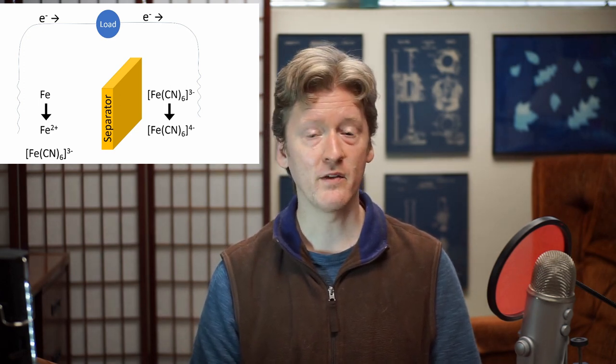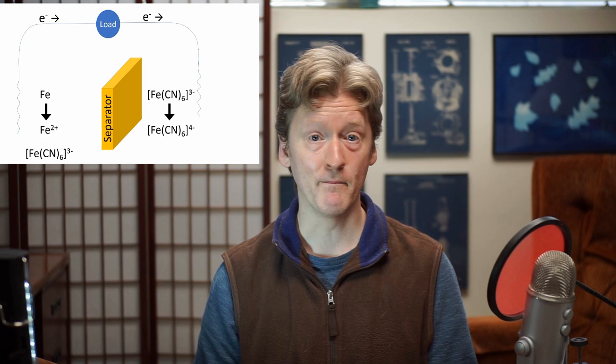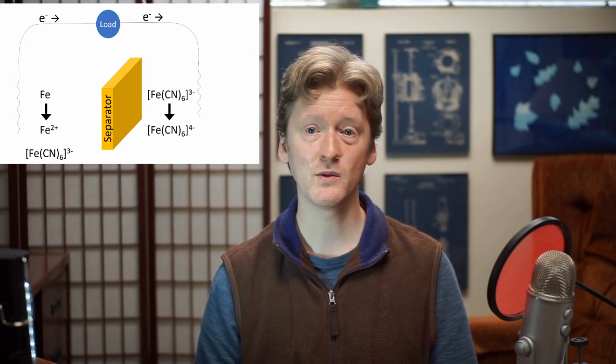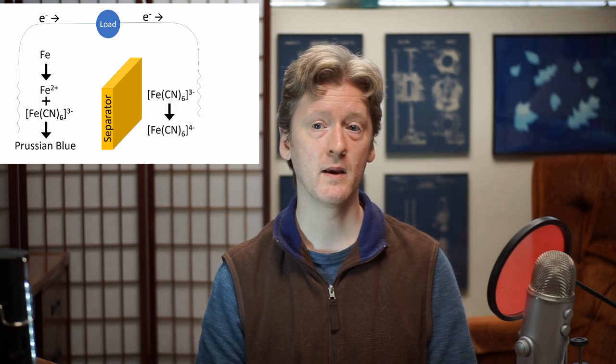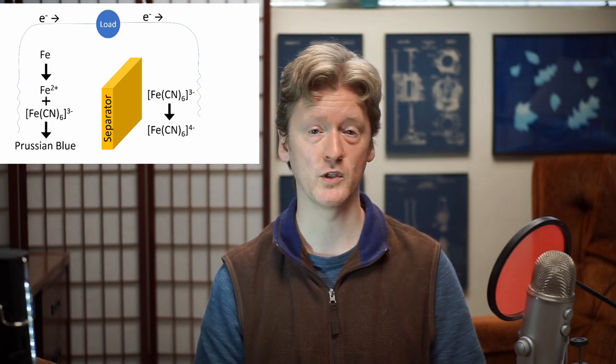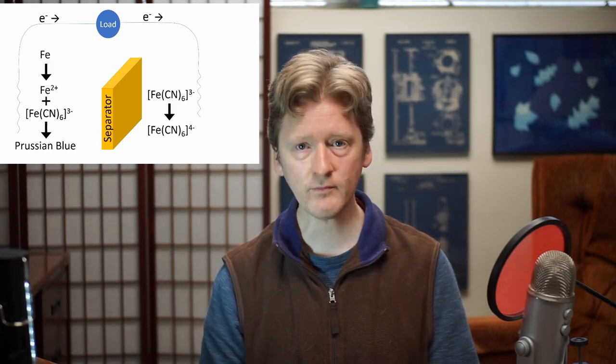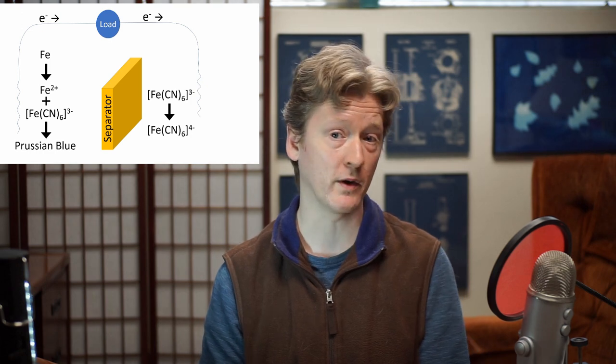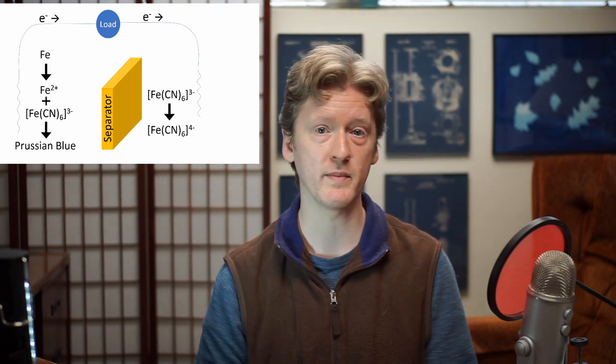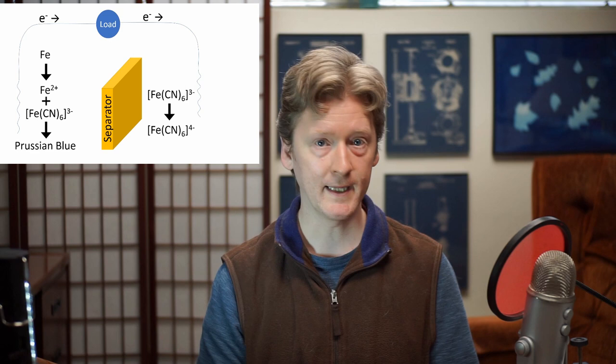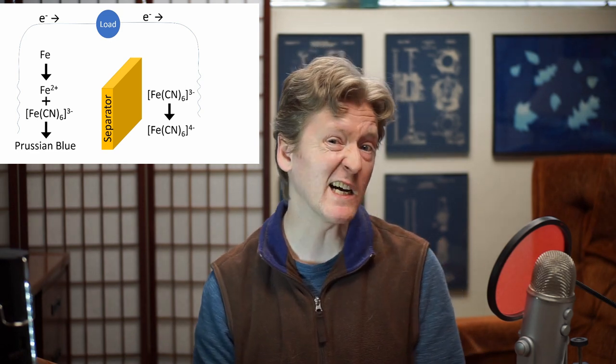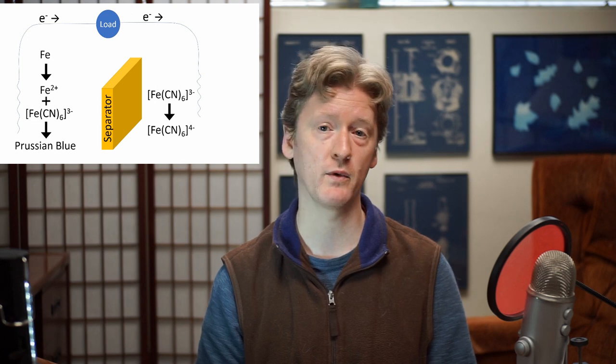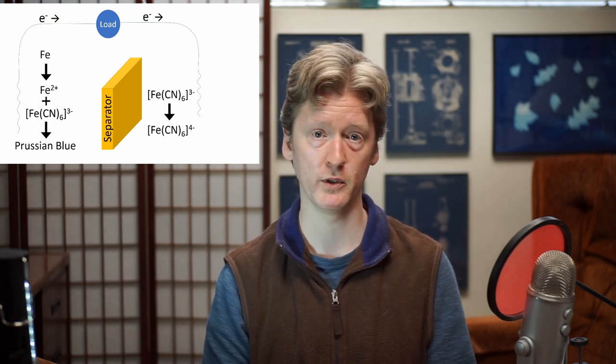The problem is that if we put ferricyanide at both the positive and negative electrodes, when it's at the positive electrode it could react with iron-2 plus to make ferroferricyanide, which is Prussian blue. Now ideally there would only be ferrocyanide at the negative side and there wouldn't be any ferricyanide, but nothing's perfect. And my hypothesis is the battery will just slowly degrade itself as the ferricyanide reacts with iron-2, and makes Prussian blue on the electrodes.